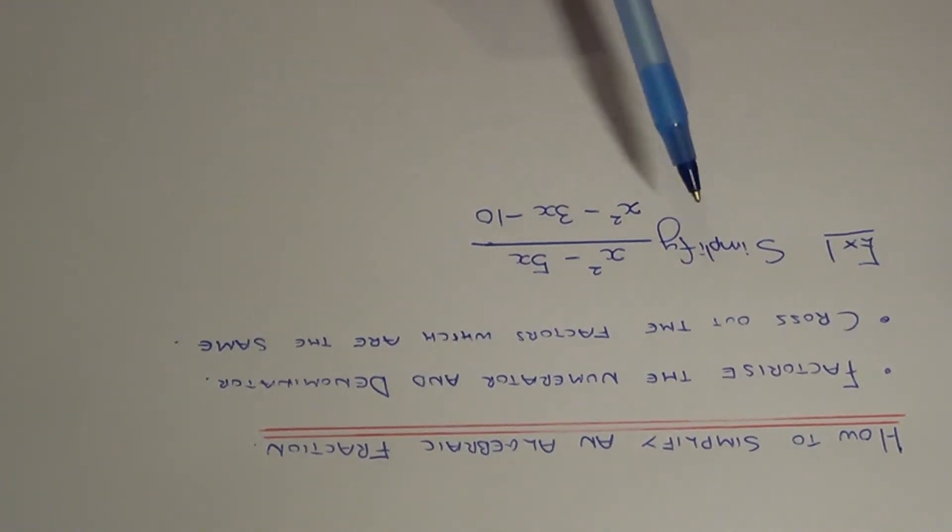So let's go through this example here. We need to simplify x squared minus 5x all over x squared minus 3x minus 10.